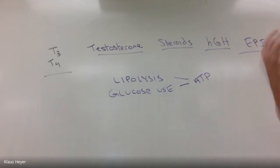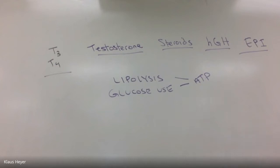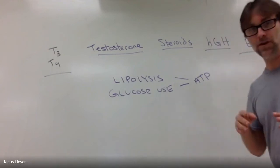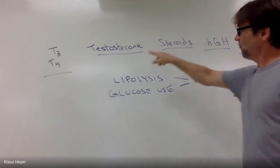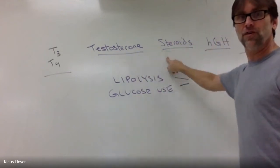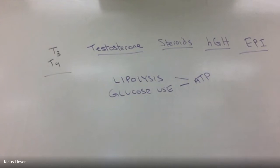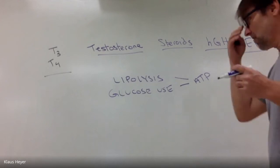Fats and sugars are where we get energy — we use them to make ATP. Your body needs energy to do anything: grow, maintain metabolism, repair tissue, or run away from a snake. That's why they all kind of do the same things. Sometimes they work together — somebody going through puberty will have a ton of human growth hormone and testosterone both working together.